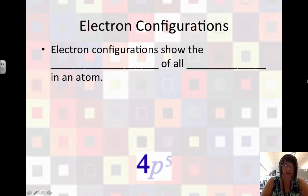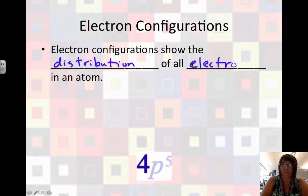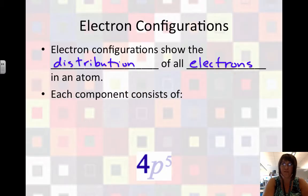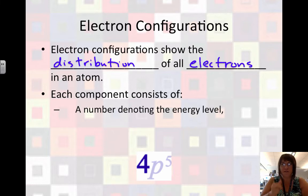Specifically, an electron configuration will show the distribution of all the electrons in an atom. Each component consists of, first of all, a number denoting the energy level. So a 4 means we're in energy level 4.